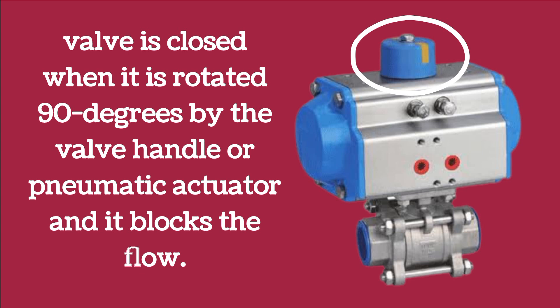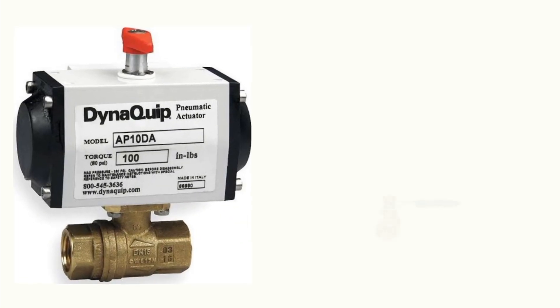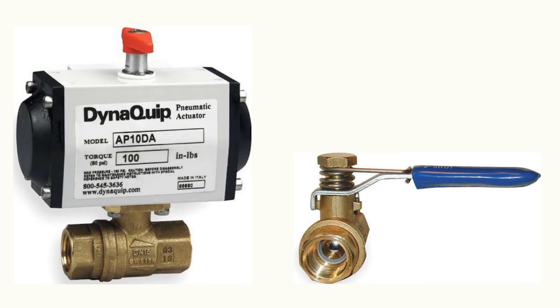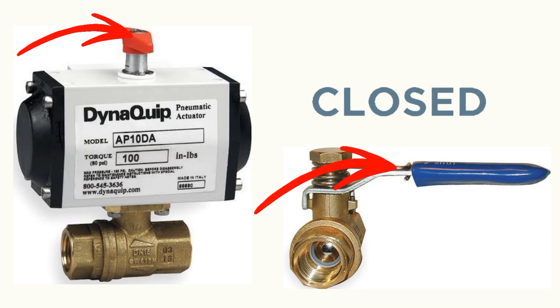In this case, the valve actuator position will be perpendicular to the pipeline. So remember: when the indication is in line, the valve is open, and when the indication is perpendicular, the valve is closed. In these images, the actuators are in closed position as they are perpendicular to the valve.